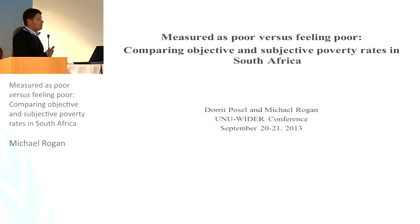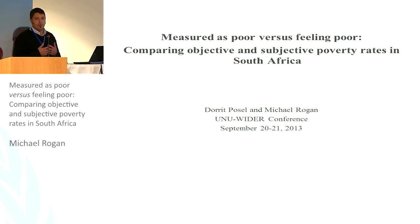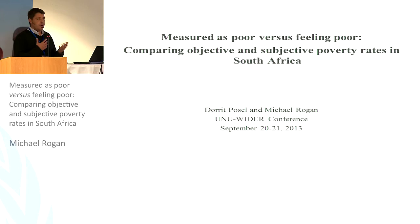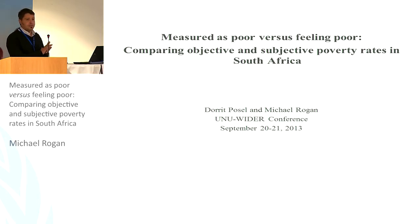When we started, both in our discussions and looking at the data, we discovered what you might expect in a country like South Africa — that many households that were very, very wealthy, in terms of having several cars and several high earners in the household, were also identifying themselves as subjectively poor. This got us thinking more about what we were both really interested in: the overlap between objective and subjective measures of poverty at the lower end of the income distribution, and what it means when these two measures of poverty don't overlap.